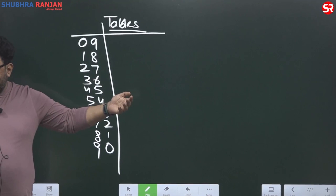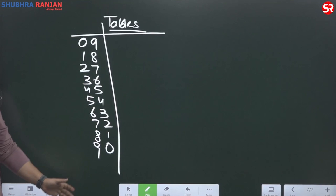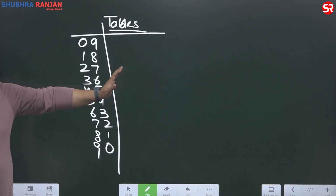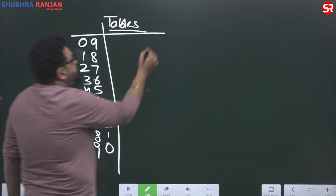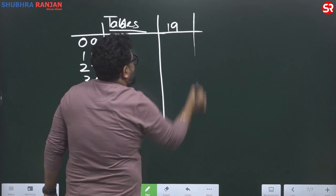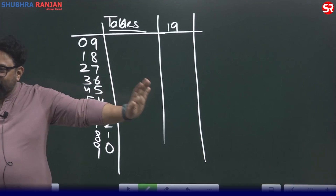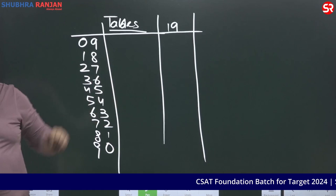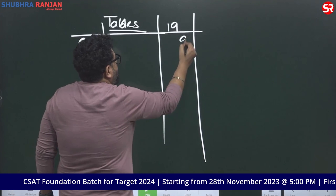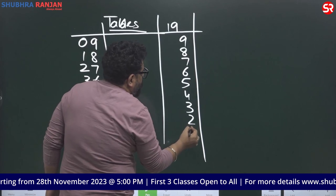Did you go ahead? Point is this — did you go ahead? Now, the table of 19 has given us a lot of pain. Teachers used to use it as a weapon — a weapon of mass destruction! So listen to the table of 19. Please pay attention. 9, 8, 7, 6, 5, 4, 3, 2, 1, 0.